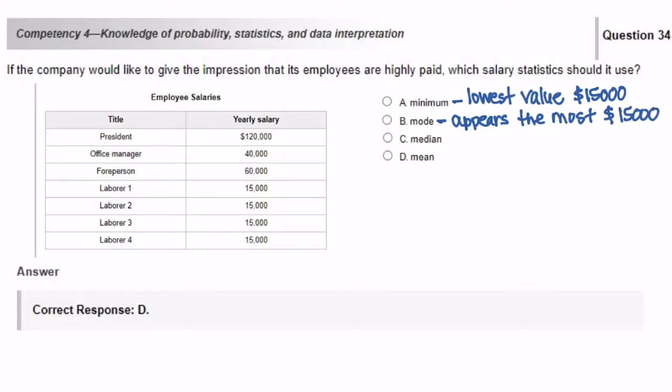Answer choice C, median. Median is the middle number. So we would need to put the numbers in order from least to greatest and then determine which number is going to be the middle number. In this case, it's going to be $15,000.